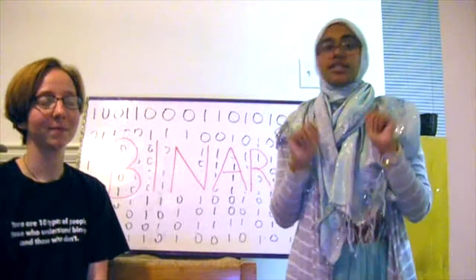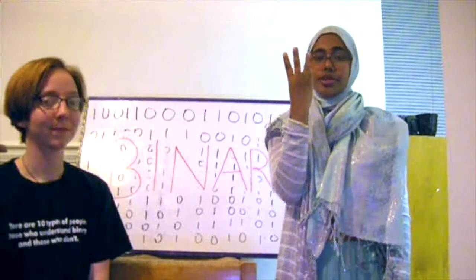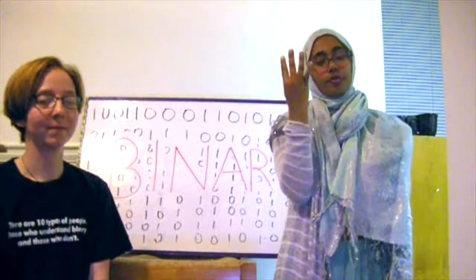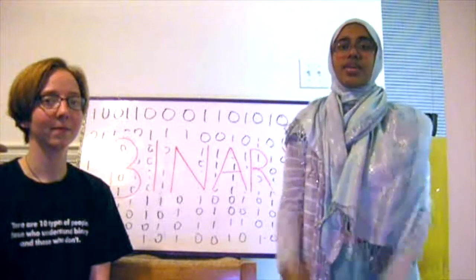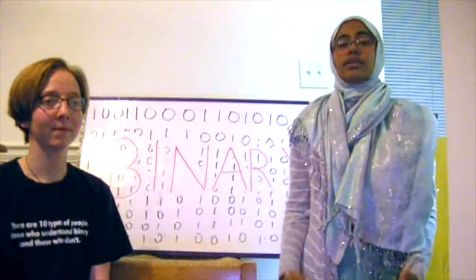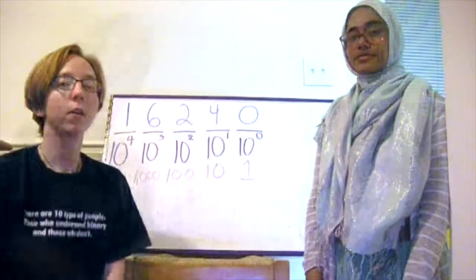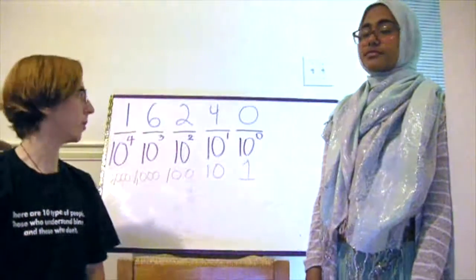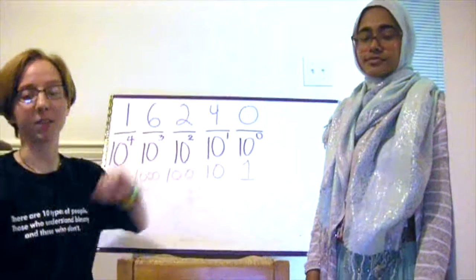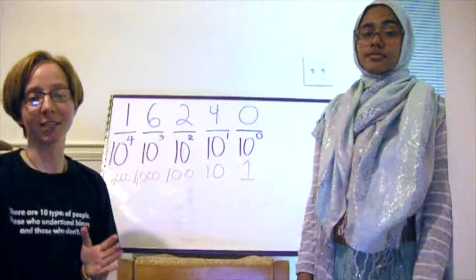When we learn how to count, we learn 10 single-digit numbers: 0, 1, 2, 3, 4, 5, 6, 7, 8, and 9. This is called counting in the decimal number system, or base 10. When learning how to read decimals, we learn about the ones place, which is 10 to the 0, the tens place, the hundreds place, et cetera.